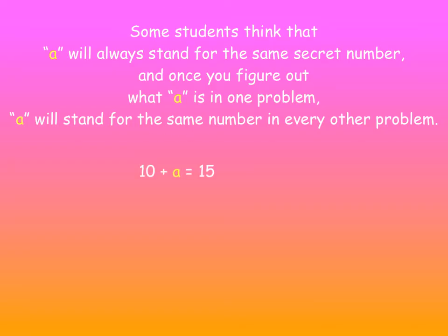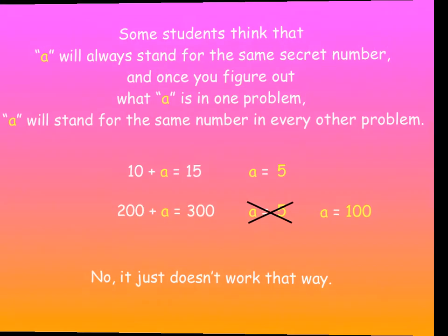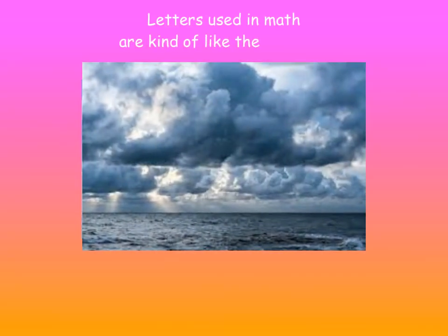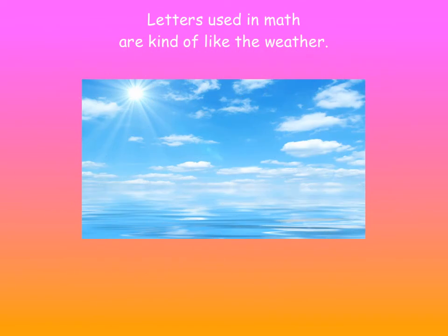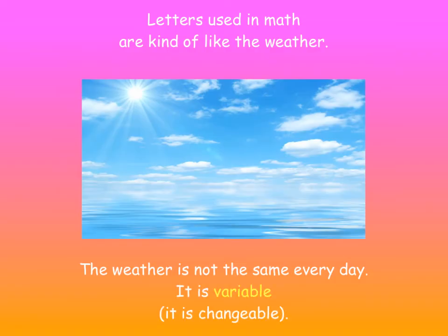Some students think that A will always stand for the same secret number and once you figure out what A is in one problem, A will stand for the same number in every other problem. Is that right? 10 plus A equals 15, A equals 5. 200 plus A equals 300. Well, if A equals 5, 200 plus 5 equals... That doesn't work. Okay, so A in this case would be 100. No, A doesn't always stand for the same number. It just doesn't work that way. Letters used in math are kind of like the weather. The weather is not the same every day. It's variable. In other words, it's changeable. That's what variable means.